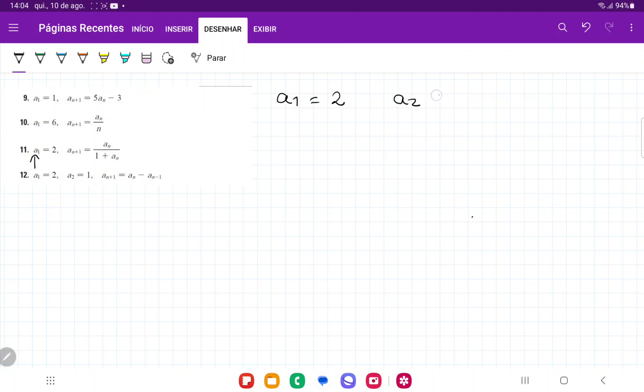So a2 is going to be an plus 1. It's going to be an, so the previous one, that is going to be the value of the previous one over 1 plus the previous one. So that's going to be 2 thirds.